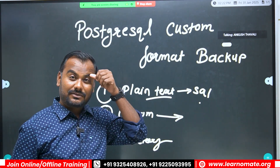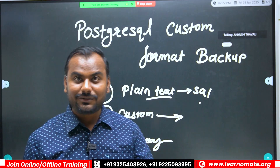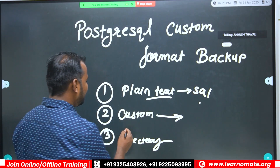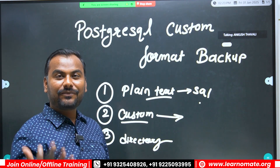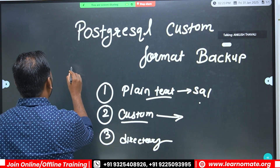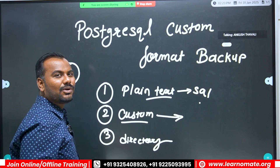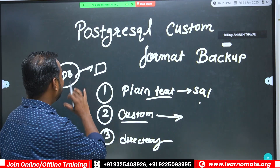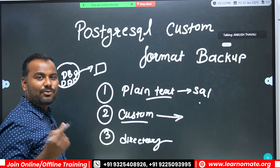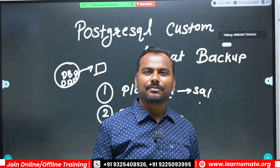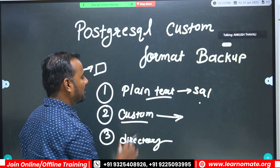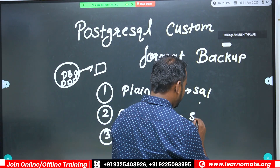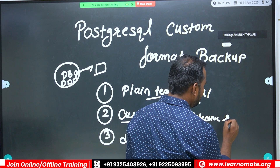In today's lecture we'll understand how to take a backup using the custom format. The custom format is mainly useful when you want to restore specific tables. For example, if I have a backup of a complete database containing many tables but I only want to restore some specific tables, that selective restoration is possible with custom format but was not possible with plain text format.